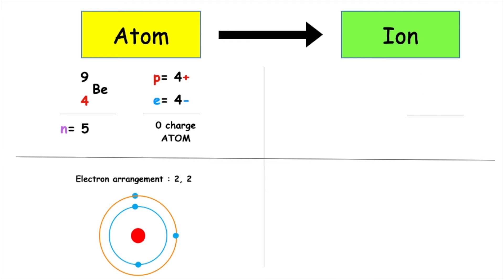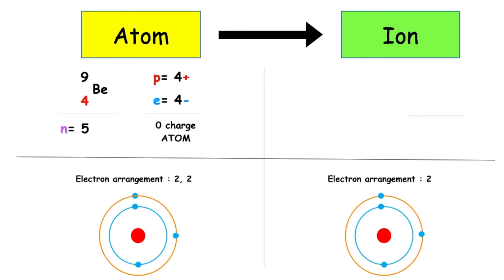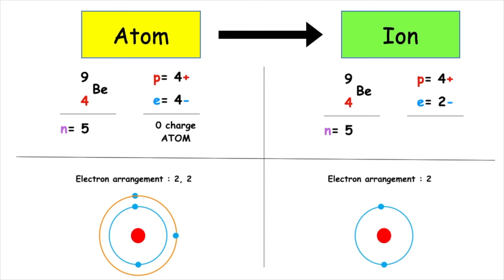Beryllium is found in Group 2 and has the electron arrangement 2-2. To achieve stability, we look at the outermost occupied energy level, and the beryllium atom will want to lose two electrons to become stable. This means that the electron arrangement is 2. We still have four protons inside the nucleus, but we now only have two electrons, which means the charge on the beryllium ion is 2+.